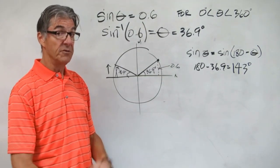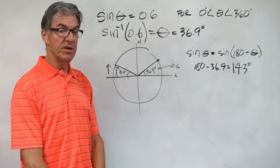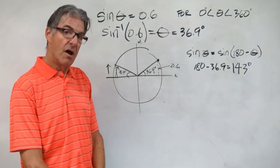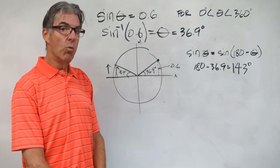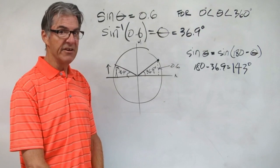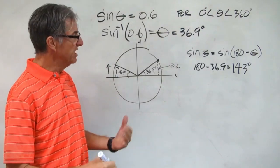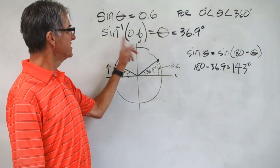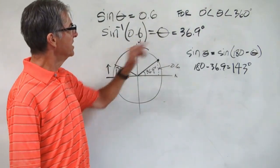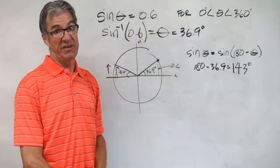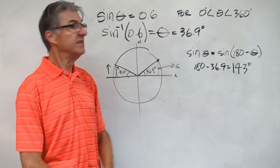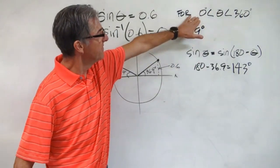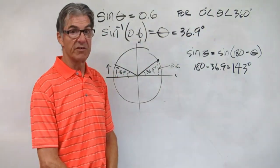Now think back to a previous lesson — find one more angle where the sine of that angle gives us 0.6. It's got to be in this range of degrees.